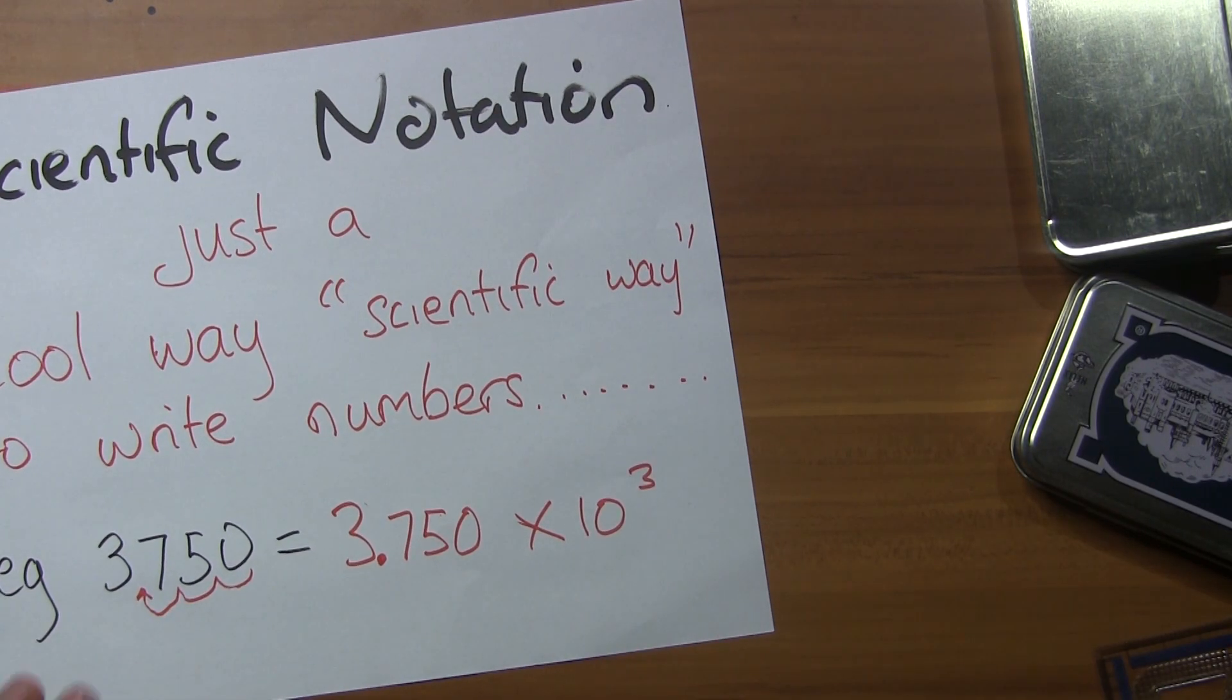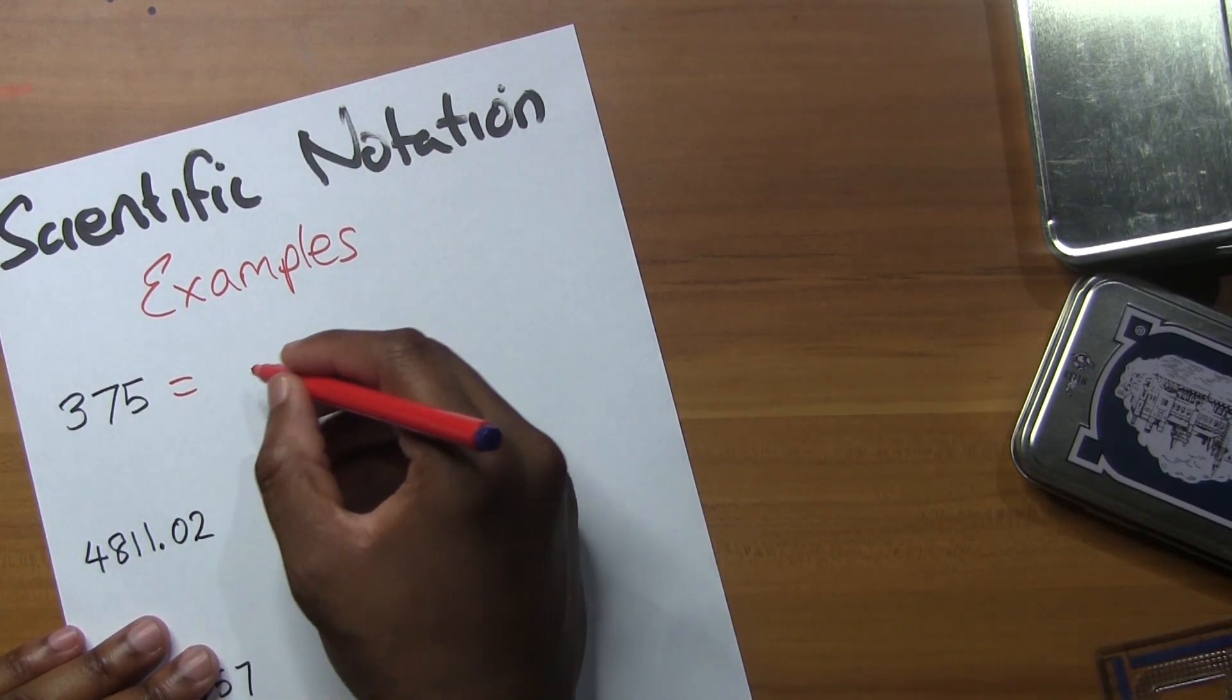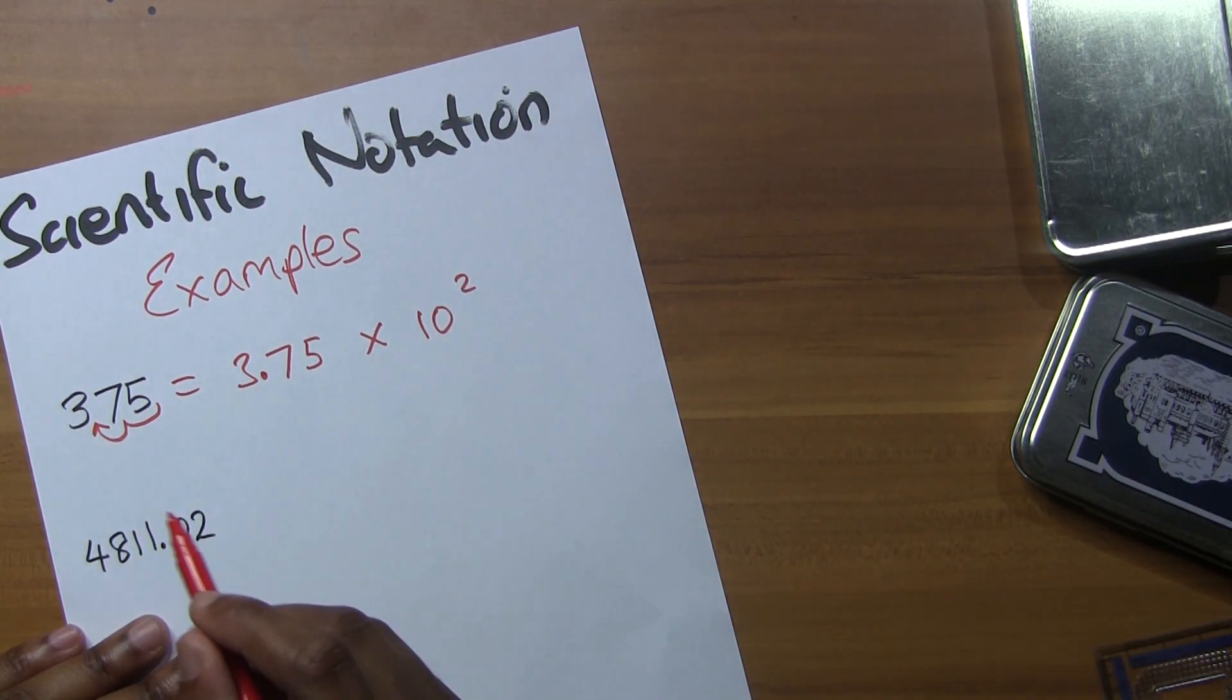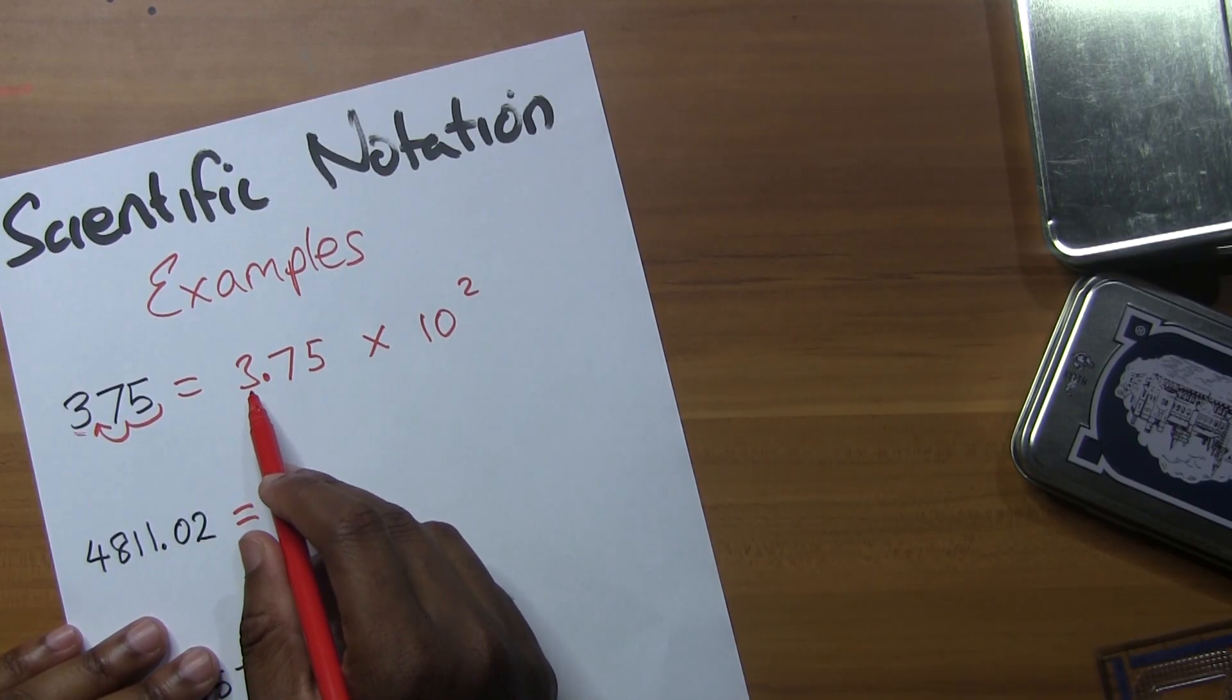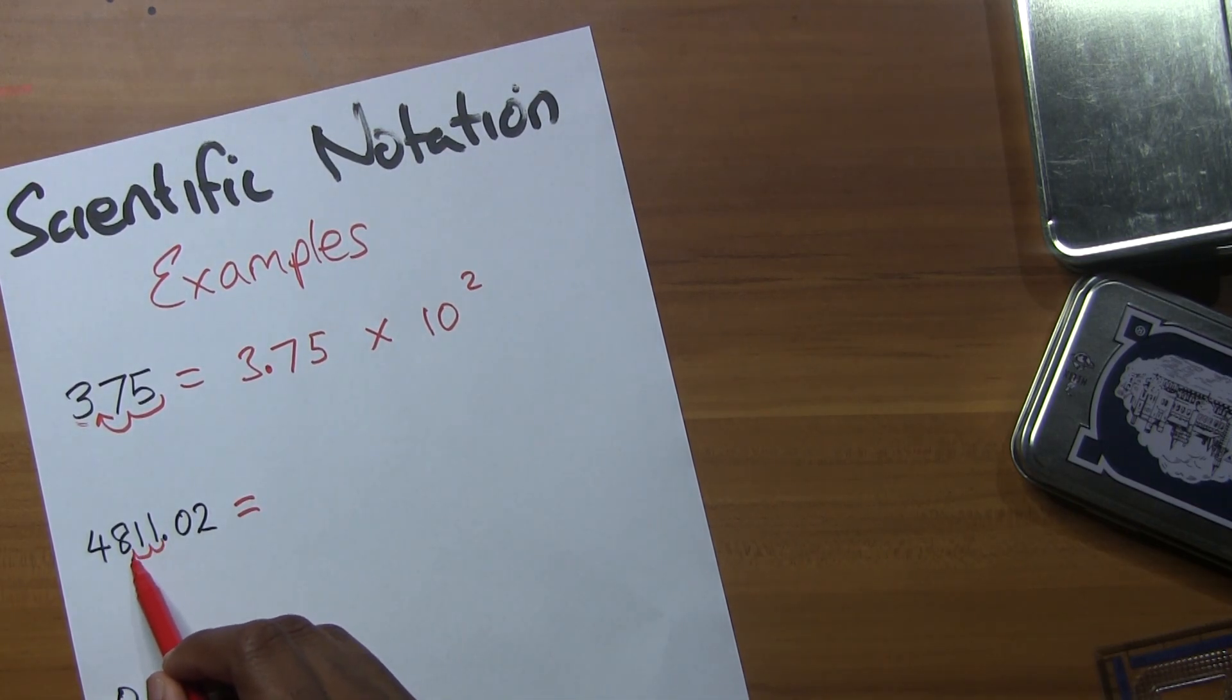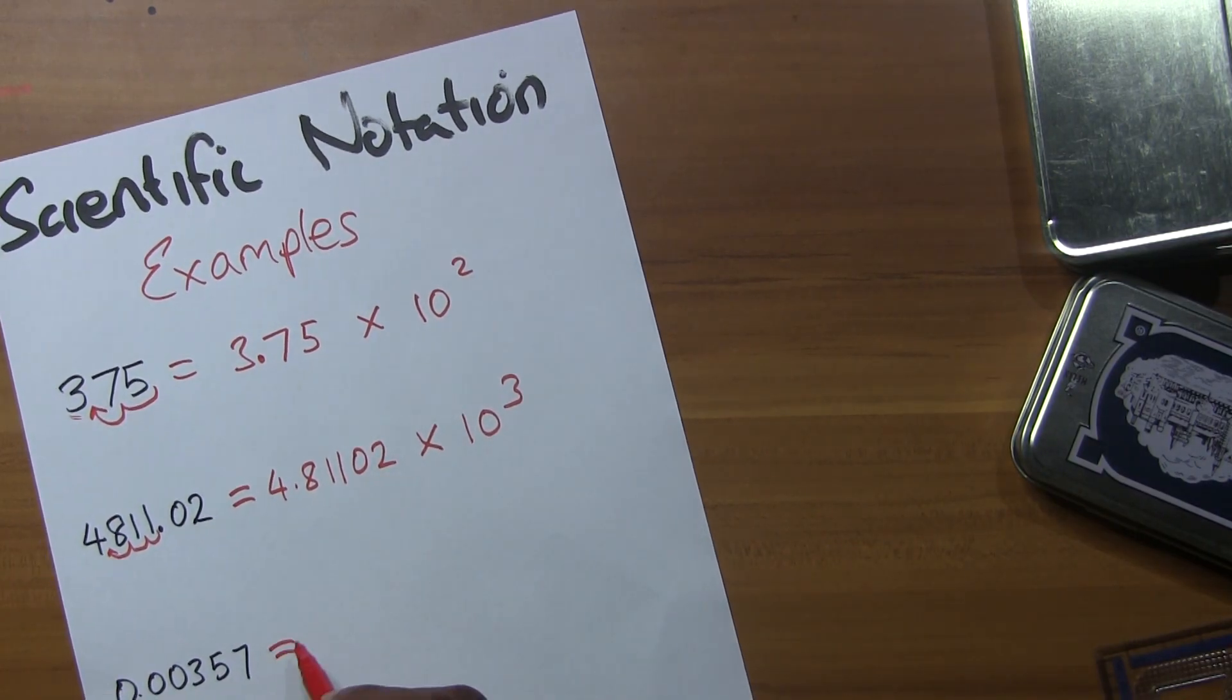Let's look at some more examples. 375 in scientific notation: the decimal point moves so it comes right before the first number. This becomes 3.75, so it's between 1 and 10. That's how we like it. Next: 4811.02. I move the decimal point three times, so 4.81102 × 10³.